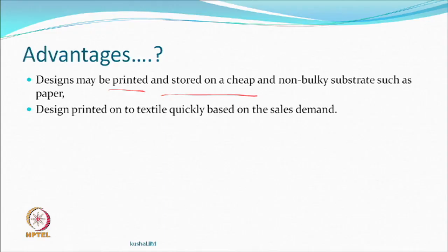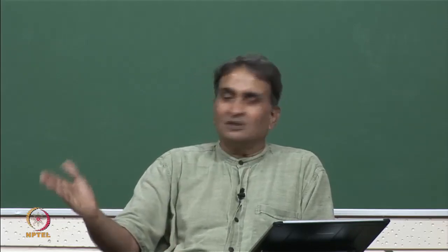Some common-sense advantages: designs may be printed and stored on a cheap and non-bulky substrate. The bulk and thickness of paper is very small - you can make a roll and keep it. Storage could be cheap. Otherwise you had to store all kinds of rollers and screens and bring them out whenever needed. Designs can then be printed onto textile based on demand. If somebody says they want the same design from a previous season, you actually have a printed design which just has to be transferred. You can also try the same design on a different substrate - for example, from a woven fabric to a knitted one - and see how it looks before deciding.